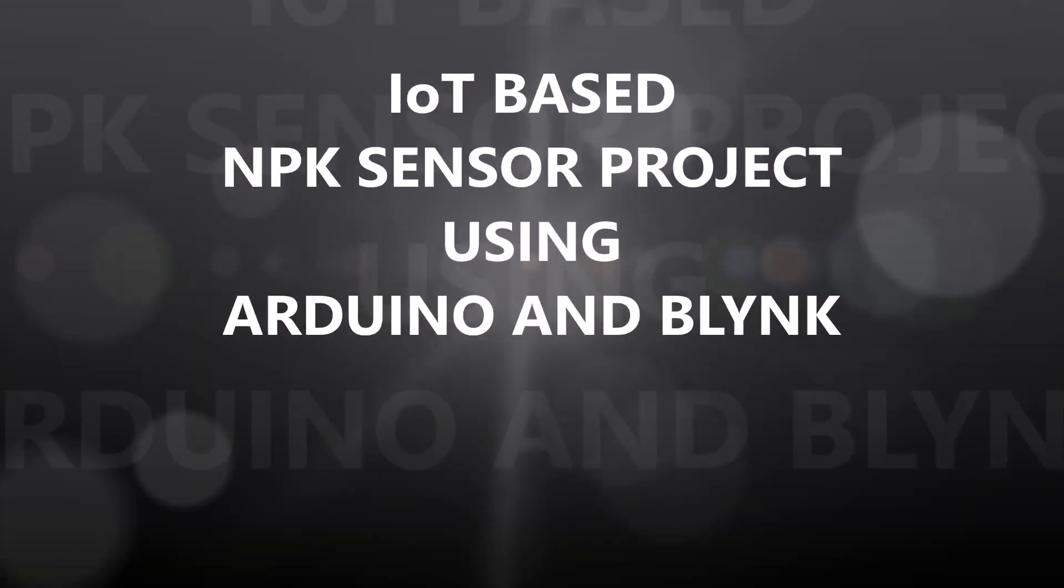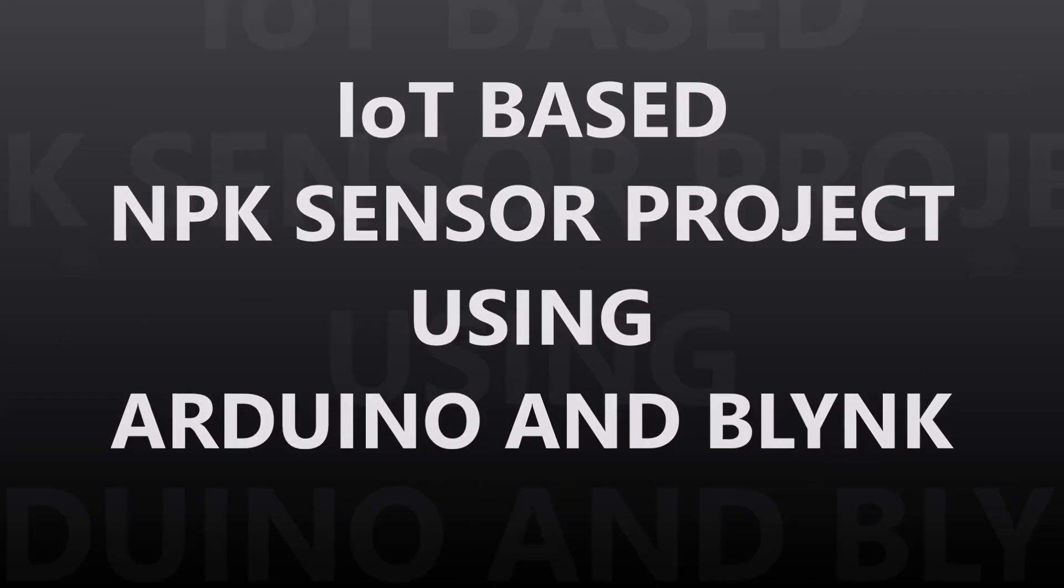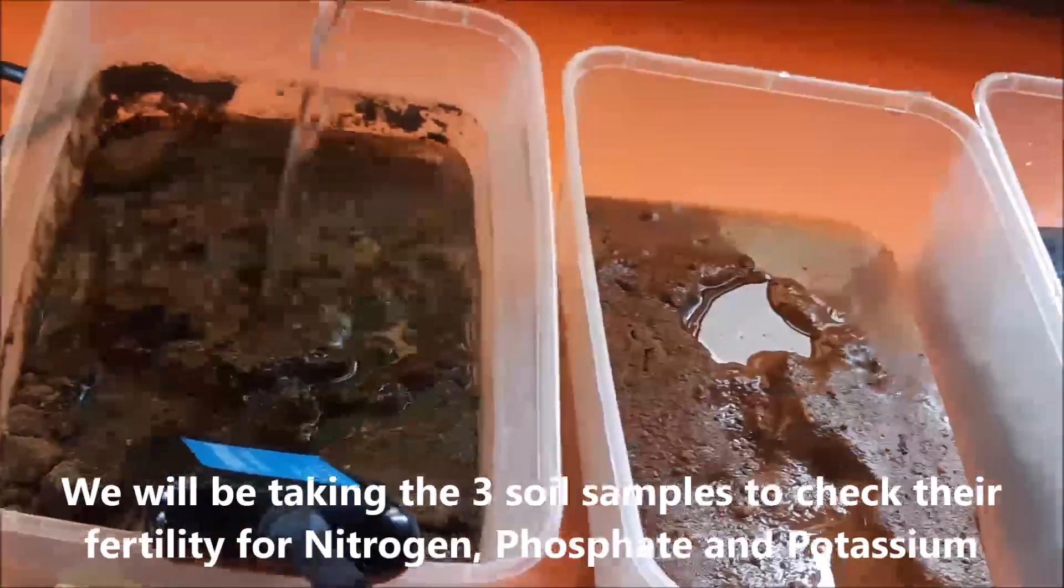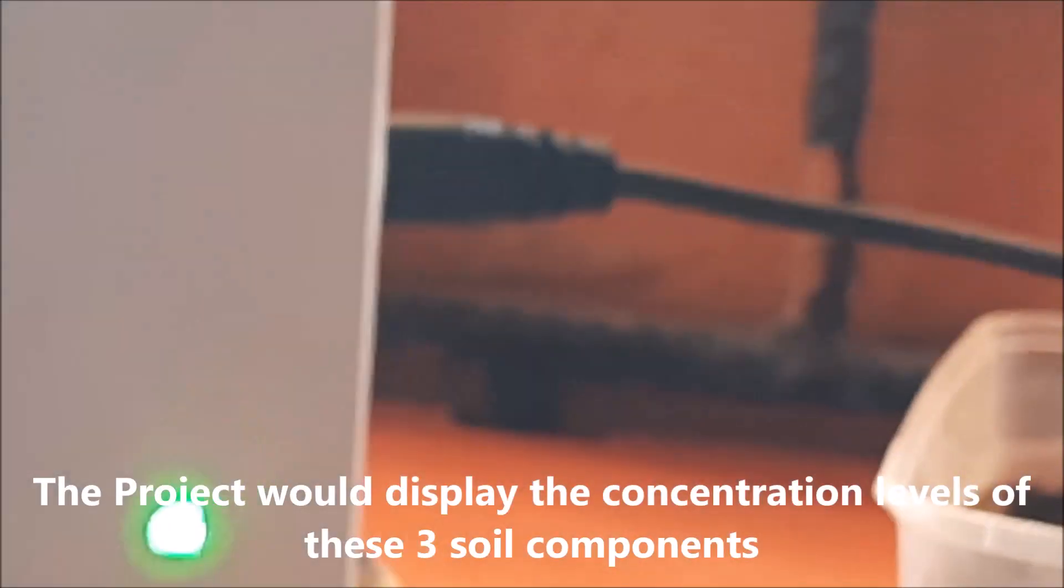Welcome. In this video tutorial we're showing how to design an IoT based NPK sensor project using Arduino and Blink. We will be testing three soil samples to check their fertility for nitrogen, phosphorus, and potassium concentrations using an NPK sensor.